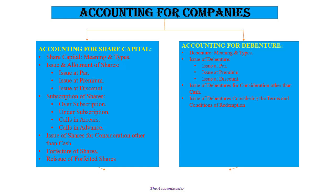Share capital cannot be refunded within the lifetime of the company, but in the case of debentures, the amount is redeemed after a certain period of time. After a fixed period, debenture money is returned. Based on the conditions of repayment, we pass journal entries accordingly. Then we will study redemption of debentures — what journal entry will be passed when debentures are returned, and from where the money will come: by issuing new shares/debentures, from outside sources, or from profits.